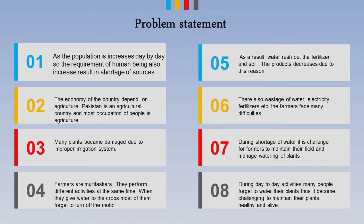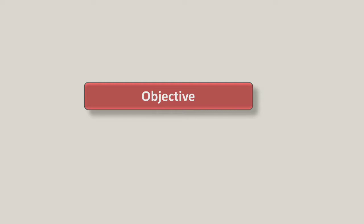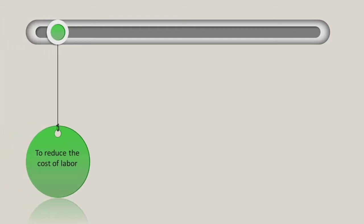In the next slide we have objectives. The first and main objective of our project is to reduce the cost of labor. By implementing this system in the irrigation system, there will be no need for extra labor. If the owner of the field wants to give water to the crops, they can do so simply by installing this mechanism. It automatically turns on the water when needed in the field and automatically turns off when the water level is fulfilled.